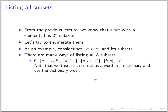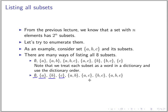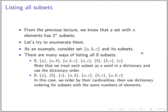We may have other ways of ordering or listing these eight subsets. Another way is to start with the empty set, then list subsets with one element, then subsets with two elements, and finally the last one will be the subset with three elements. So this is another way of listing subsets.